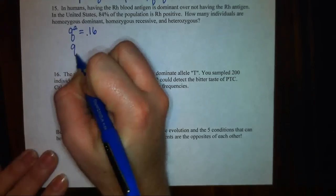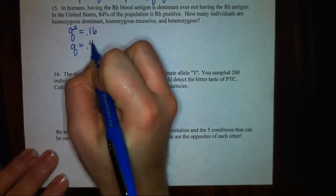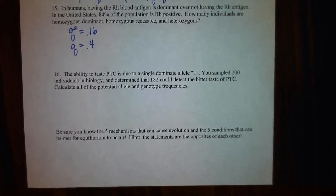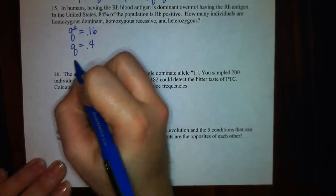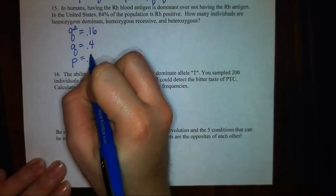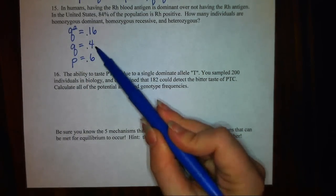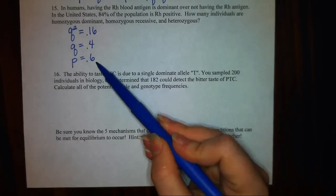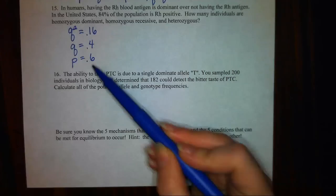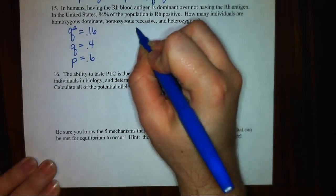That's making Q 0.4. 0.4 times 0.4 is 0.16. And hopefully, you're remembering that P plus Q equals 1. So if Q is 0.4, P must be 0.6. This means that 40% of my alleles are recessive, while 60% of my alleles are dominant in this scenario.